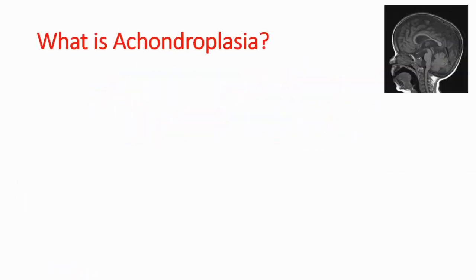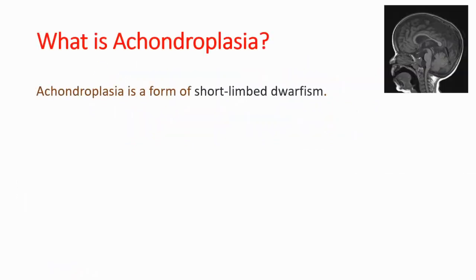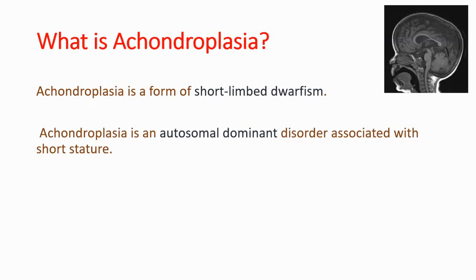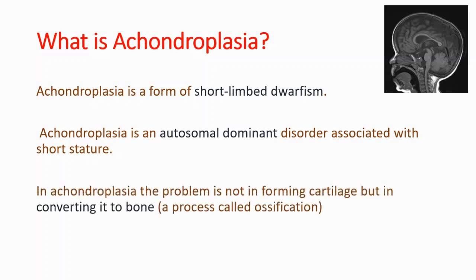First of all, it is short-limbed dwarfism and it is an autosomal dominant disorder associated with short stature. In achondroplasia, the problem is not forming cartilage but in converting it to bone — a process called ossification.